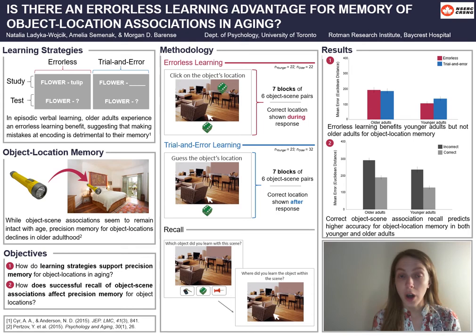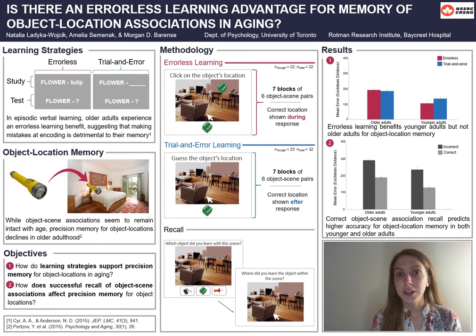We were interested in investigating how these two learning strategies — errorless and trial and error learning — support or impact precision memory for object locations in aging. Additionally, we wanted to leverage this rich precision recall data to explore how successful recall of object-scene associations affects precision memory for object locations.